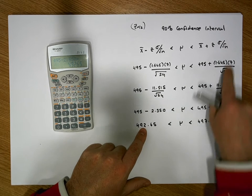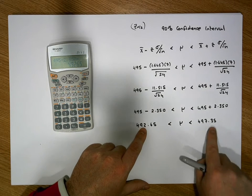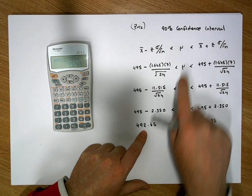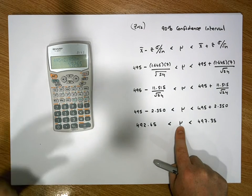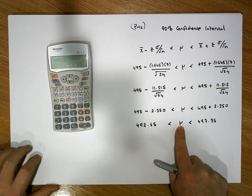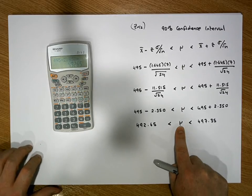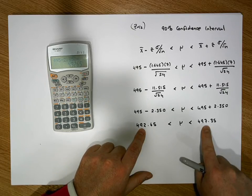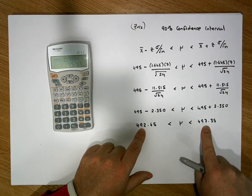And through this particular process, what we know is that we're 90% confident that the true fill of these cans, or the true filling process, the true average fill of the cans, is actually between 492 mils and 497 mils. And we're 90% confident about that.